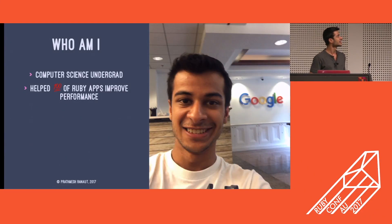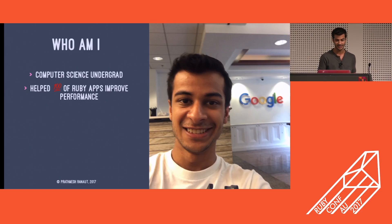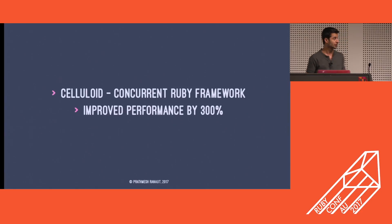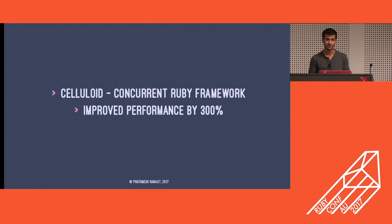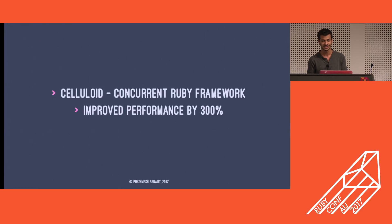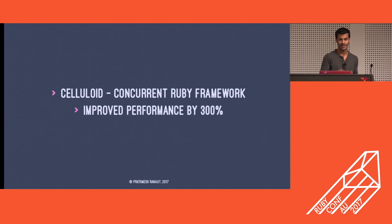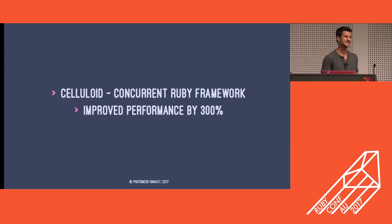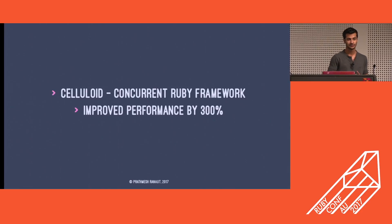I'm a computer science undergrad, and I've helped hundreds of Ruby apps fix performance bottlenecks in the code. You might be familiar with Celluloid — it's one of my popular works, and it's a concurrent Ruby framework. Last summer I worked on Celluloid and managed to make it faster by about 300%, which I think is pretty good. Most of the tips I'm going to share are from my experience, from what I learned optimizing Celluloid.